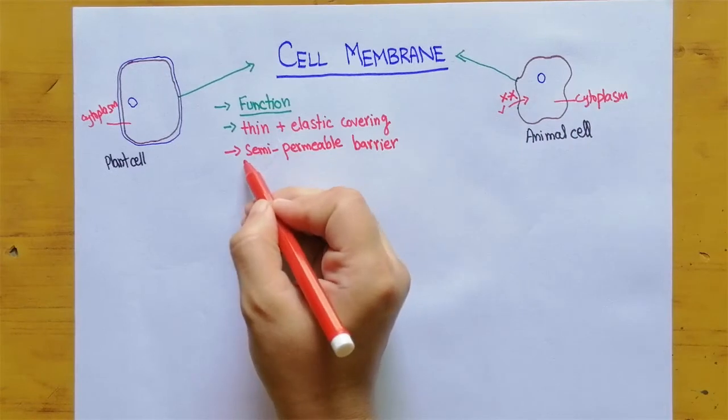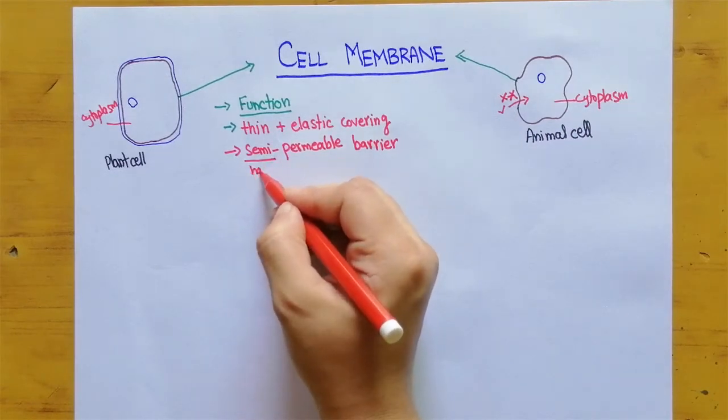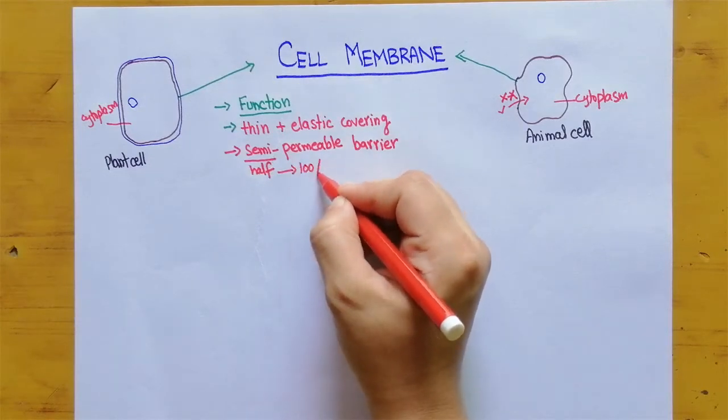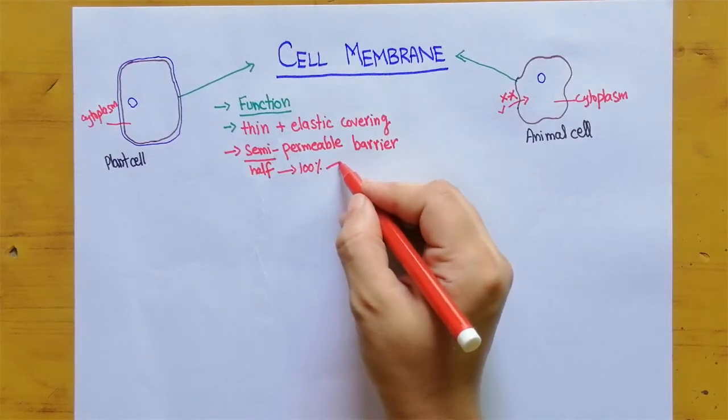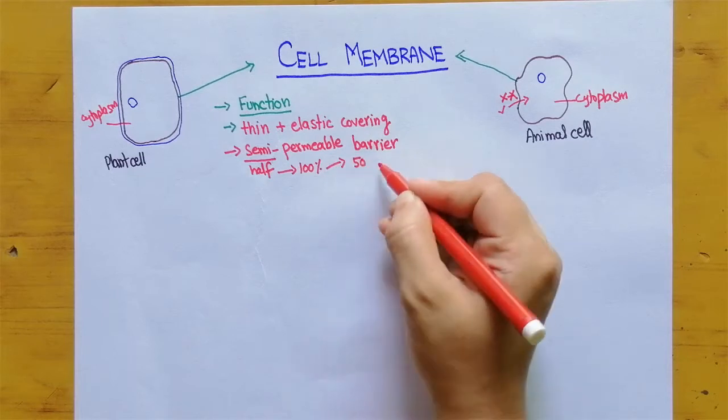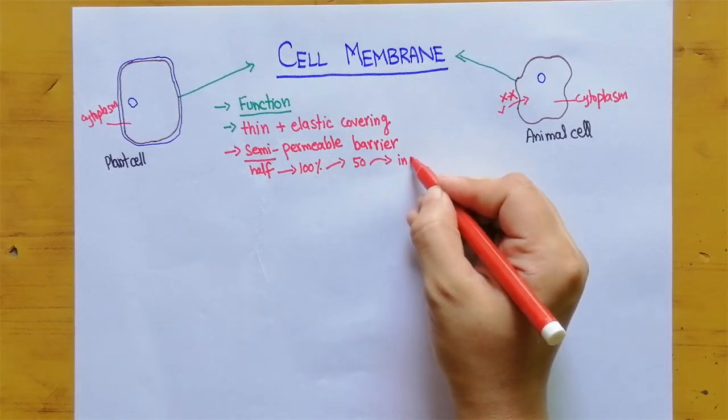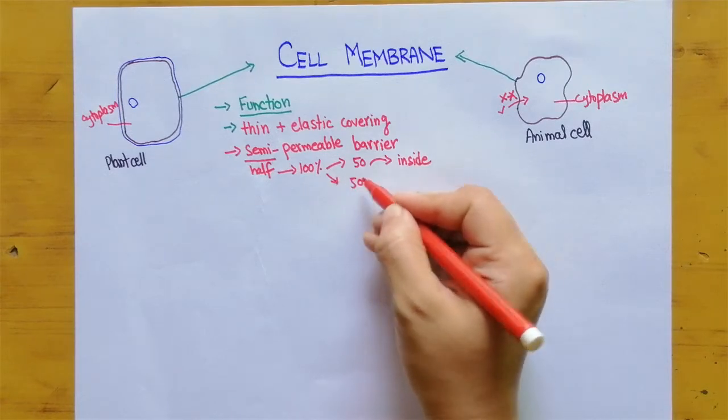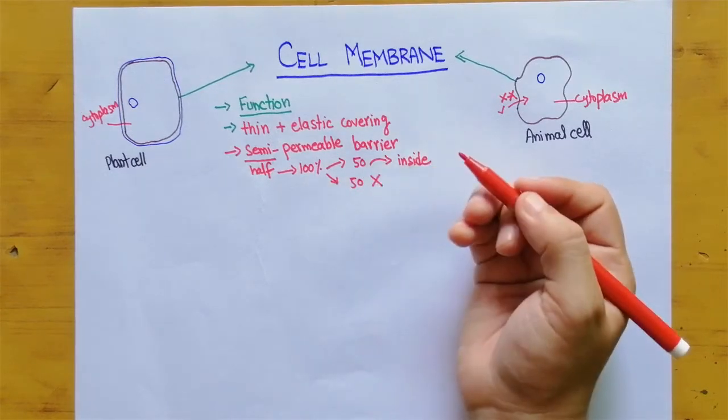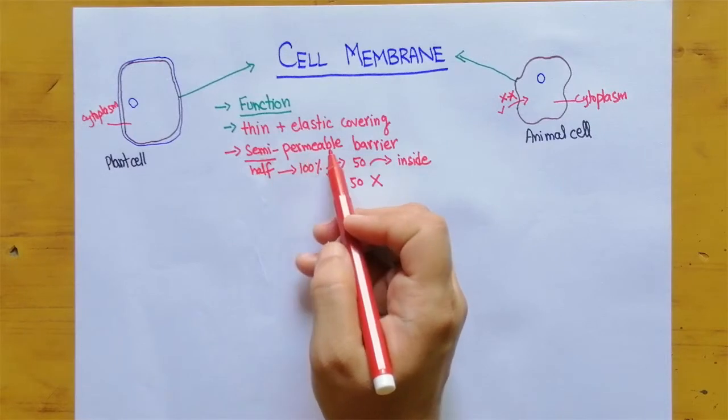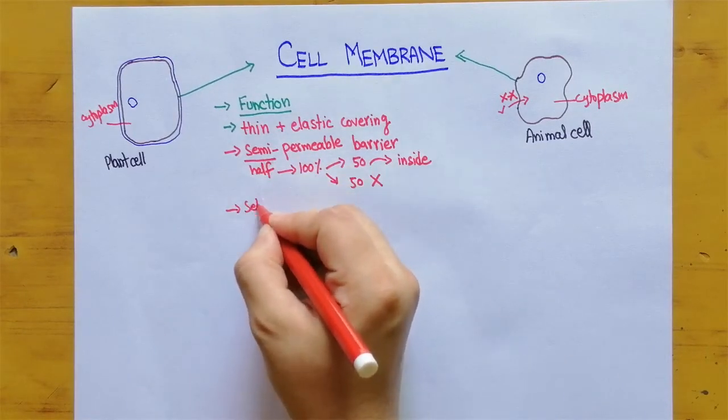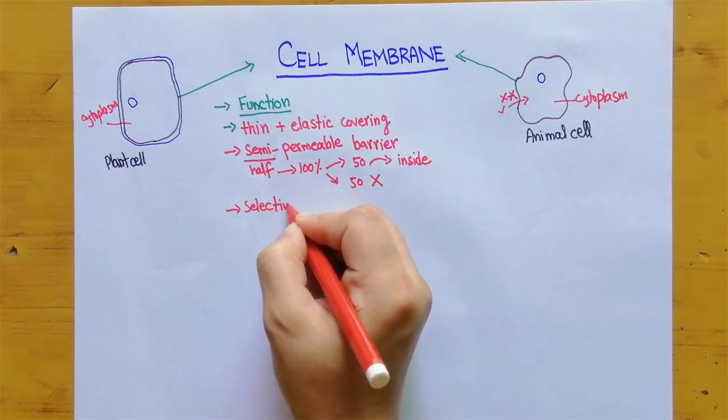Semi means half. Like for example if we have 100% molecules, 50% they can go inside but 50% they cannot go inside. So this is semi-permeable membrane. Along with semi-permeable it is also a selective membrane.